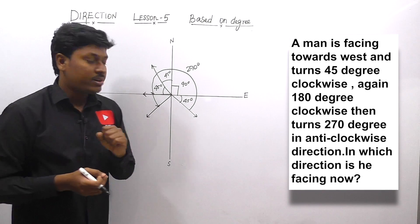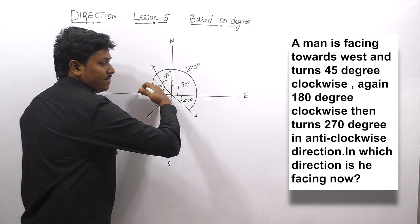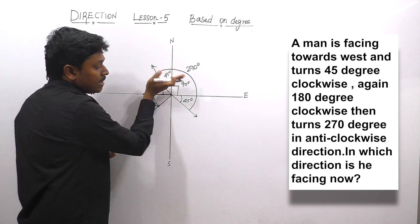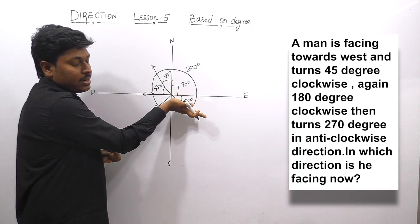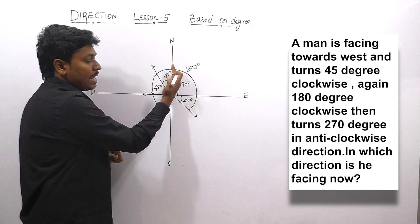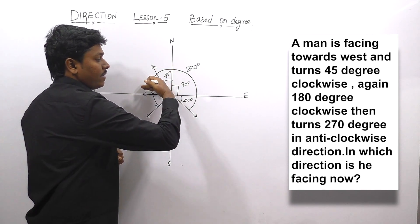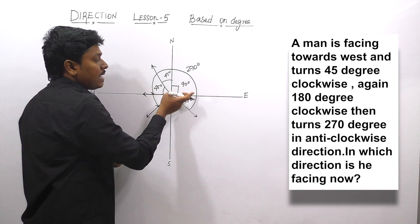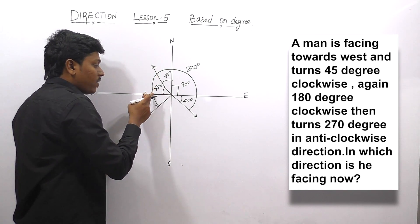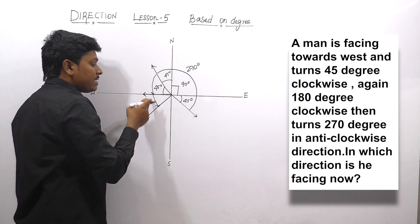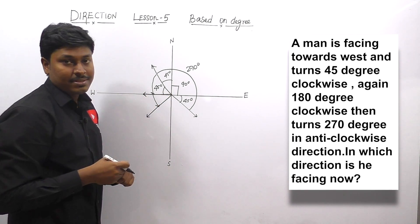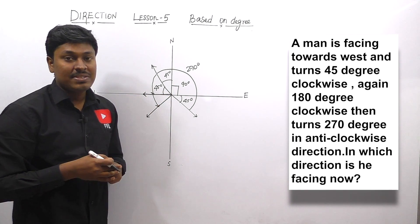Most important recap: initially, the man is facing west. Then he turns 45° clockwise. From here, 180° clockwise. From here, 270° anti-clockwise. So: 45, 90, 45, 45, and 45. This complete angle will be 180°. We already know that. So 180 plus 45 plus 45 equals 180 plus 90, which is 270. I can surely say that the answer is southwest. Finally, the man is facing southwest direction.